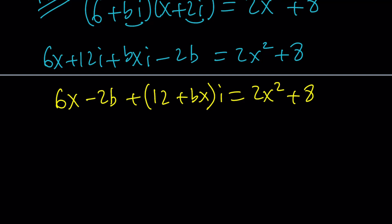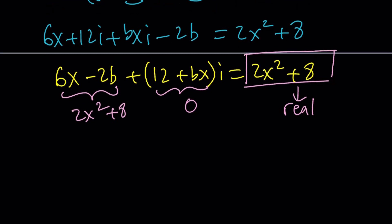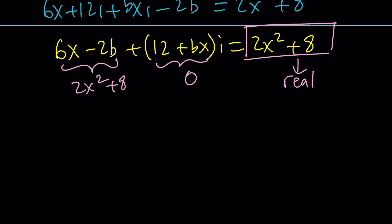But x is a real number, so 2x squared plus 8 is also a real number. This doesn't have any imaginary parts, which means its imaginary part is 0. So this imaginary part must be 0, and the real part must be equal to 2x squared plus 8. That's why all real numbers are also complex numbers.